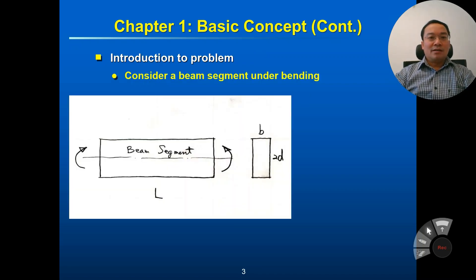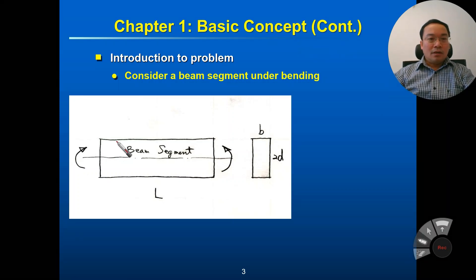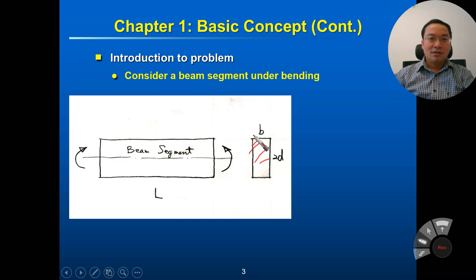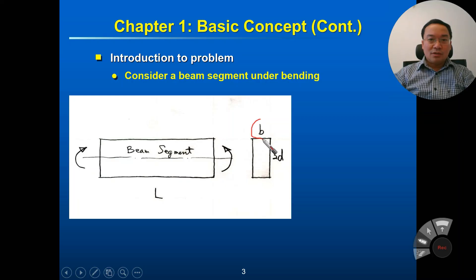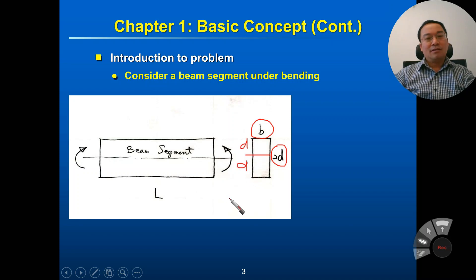Now let's consider a beam segment under bending. This is a beam segment under bending, and the beam has a rectangular section. The dimensions of the section are b and 2d — so d from the neutral axis to the top, and d from the neutral axis to the bottom. The length of the beam is L.